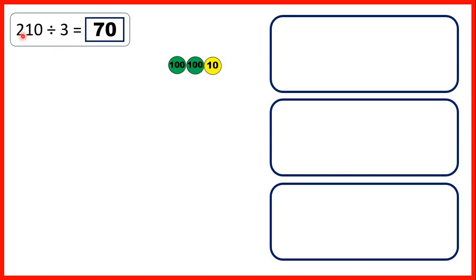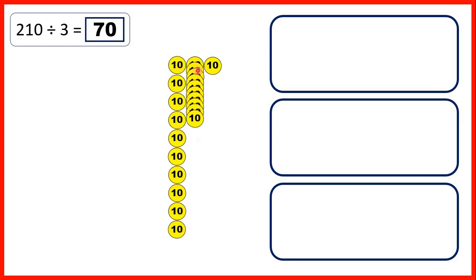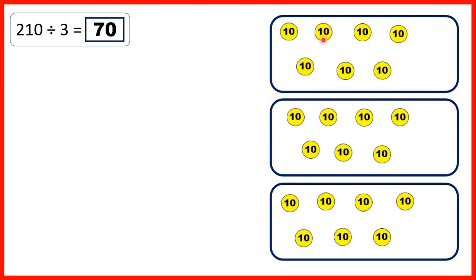And then we had 210, so that's 2 hundreds and 1 ten, and we were dividing by 3. So we can share these counters into 3 groups, but to do that we first need to exchange. We can't have 100 in the first group, then 100 in the second group, but only a 10 in the third group, because when we divide we need to make equal groups. So instead, we exchange each of our 100 counters for 10 tens. That gives us 21 tens, and we can share those out to give us 7 tens in each group, so that's 70.